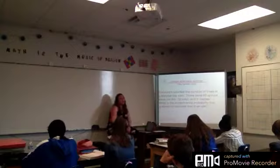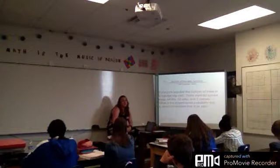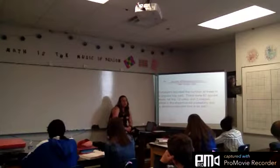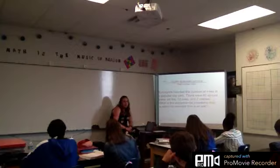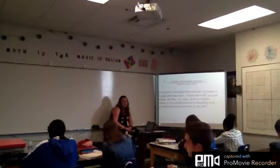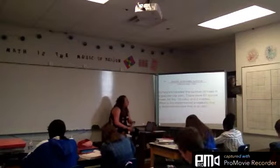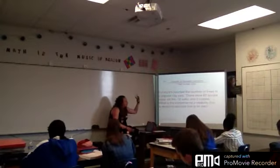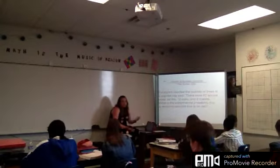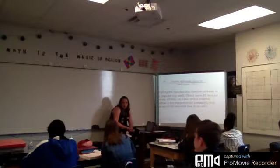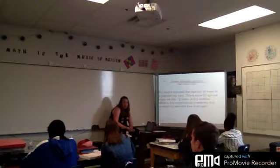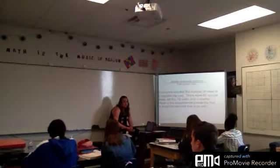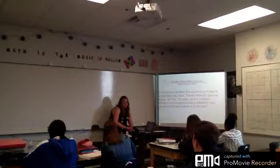So if I'm flipping a coin seven times and I'm looking for how many times I flip heads, the number on the bottom is seven and the number on top would be however many times heads happened. And that would be your experimental probability.